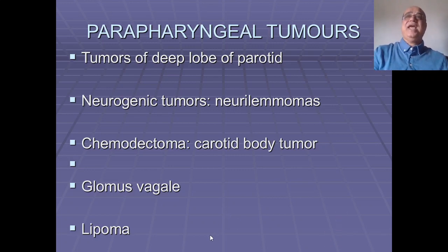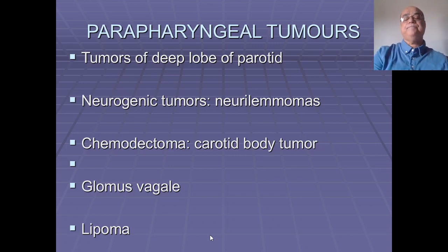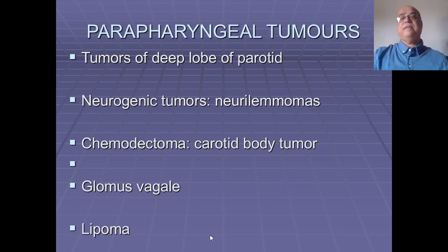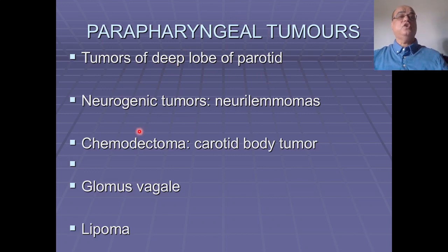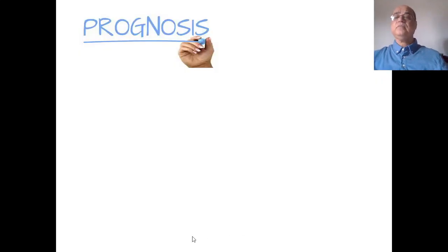Parapharyngeal tumors may present as a mass in the oropharynx, though the tumor is actually in the parapharyngeal space. These will be covered in a separate video. Such tumors include deep lobe of parotid tumors, neurogenic tumors like neurilemmomas, chemodectomas such as carotid body tumor and glomus vagale, and lipomas, which can occur and present in the oropharynx.